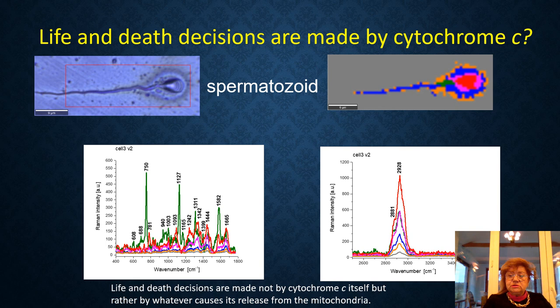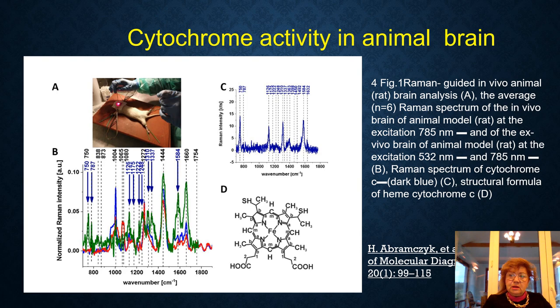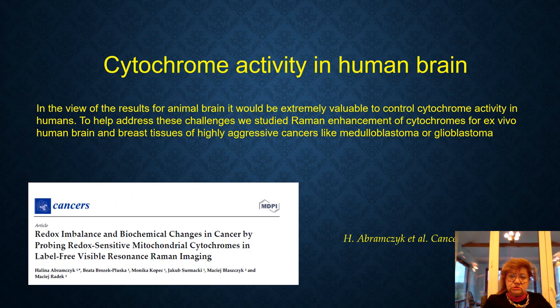Cytochrome C is a key protein needed to maintain life — respiration — and cell death — apoptosis. Cytochrome C is present in life and death decisions right from the beginning, even before life starts. Here we can see the spermatoid, with the green color and green spectra corresponding to cytochrome C. We also studied cytochrome activity in animal brain, observing characteristic vibrational bands of cytochrome.